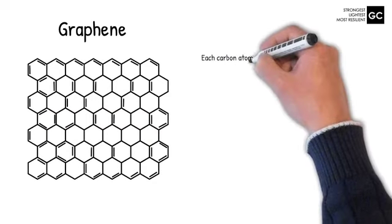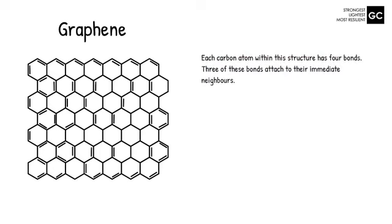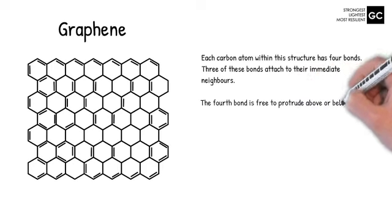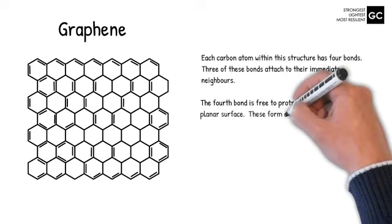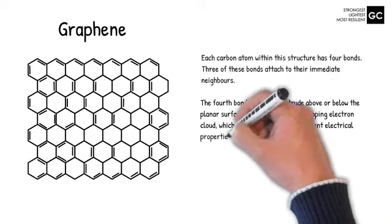Each carbon atom within the structure has four bonds, three of these bonds attached to their immediate neighbours. The fourth bond is free to protrude above or below the planar surface. These form an overlapping electron cloud, which is why graphene has excellent electrical properties.